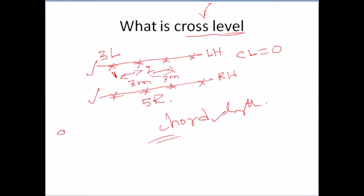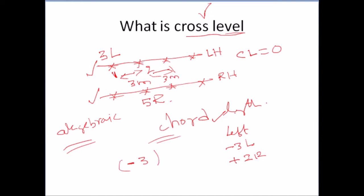Algebraic difference means you have to take the sign that comes with the value. Suppose the left side cross level is minus 3L and the right side is 2R. Algebraic difference means the difference between these two readings with their signs: minus 3 minus (minus 2), which gives minus 3 plus 2. You should not directly do 3 minus 2 equals 1 — whatever sign was there with the cross level, that you must take.